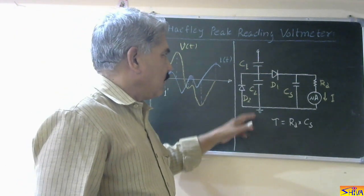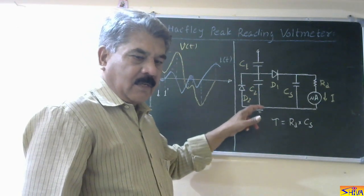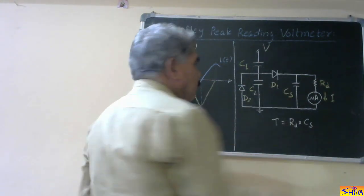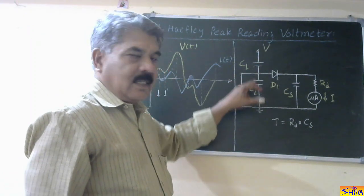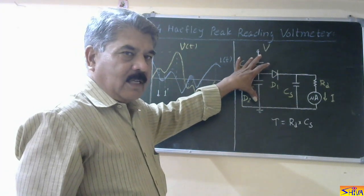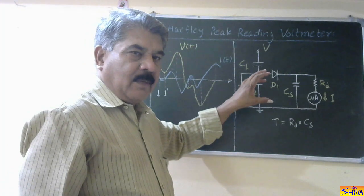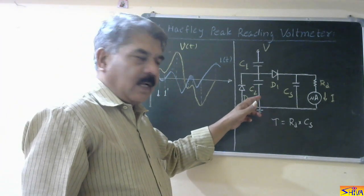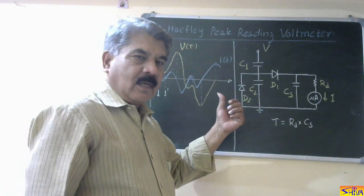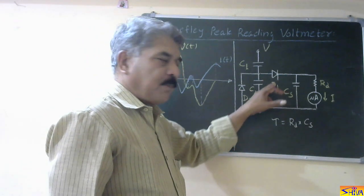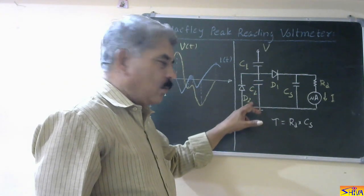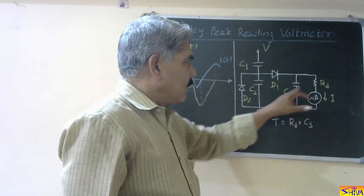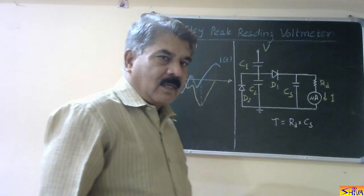This is the circuit designed by Halfley. C1 and C2 constitute a capacitance potential divider with a ratio of approximately 1000 to 1. So if the actual voltage to be measured is V, the ratio is selected such that it is 1000 to 1 — meaning if 1000 kV is the voltage, the voltage across the lower voltage arm will be 1000 volts. There are two diodes D1 and D2, connected the same as in the previous method. D1 conducts during the positive half cycle; D2 conducts during the negative half cycle and bypasses C2. After D1, there is the measuring circuit: Cs is the storage capacitor which stores the charge, Rd is the discharge resistance, and a microammeter is connected after this discharge resistance Rd.